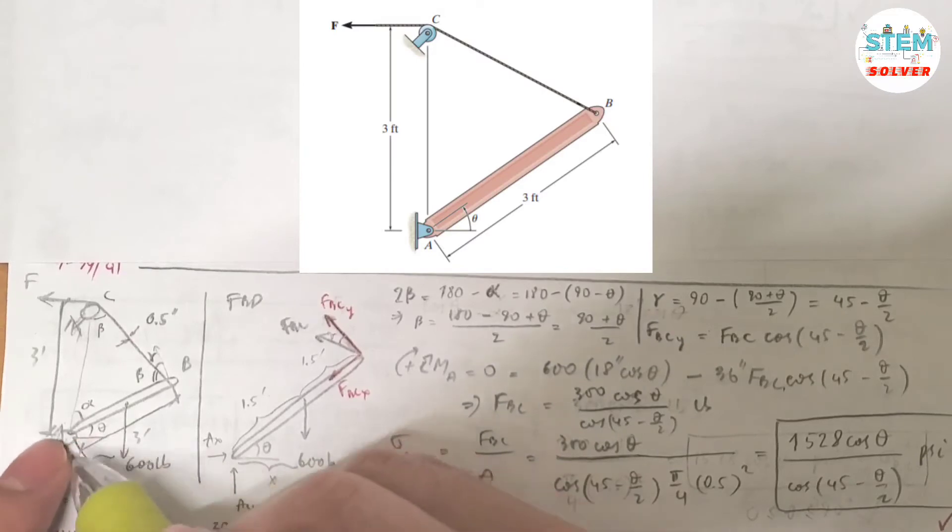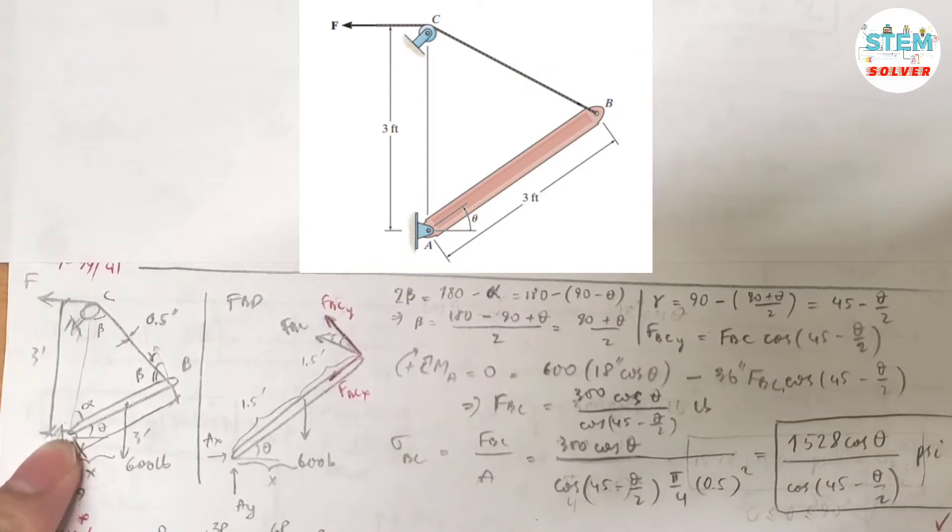Because since this is the right angle, so alpha is equal to 90 minus theta.